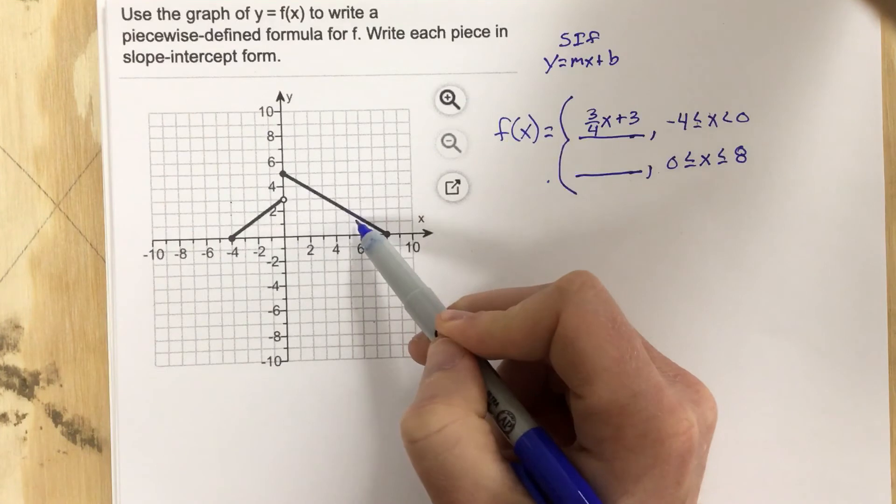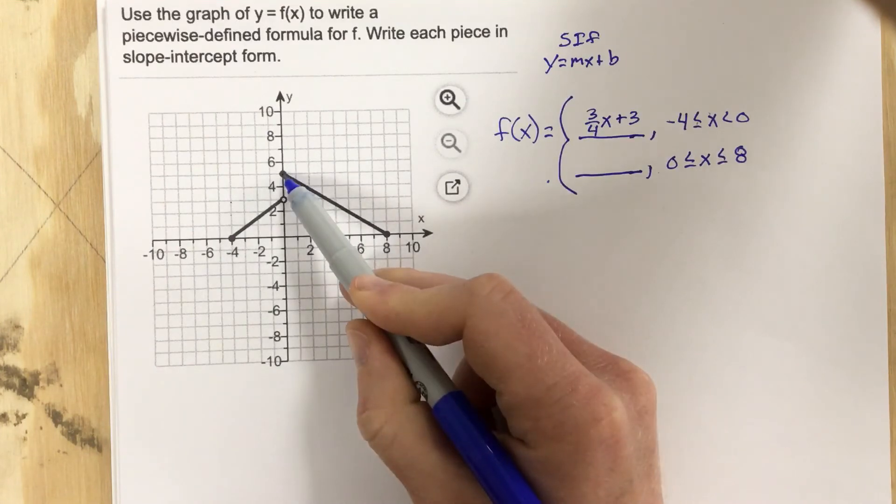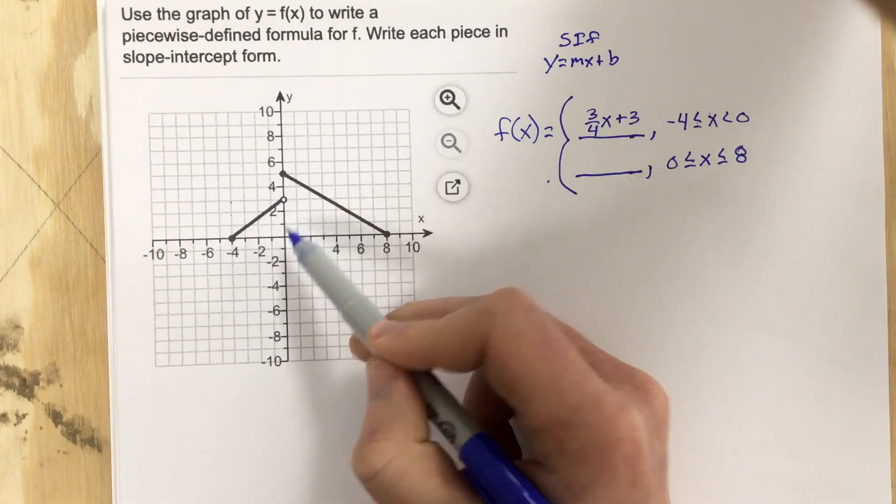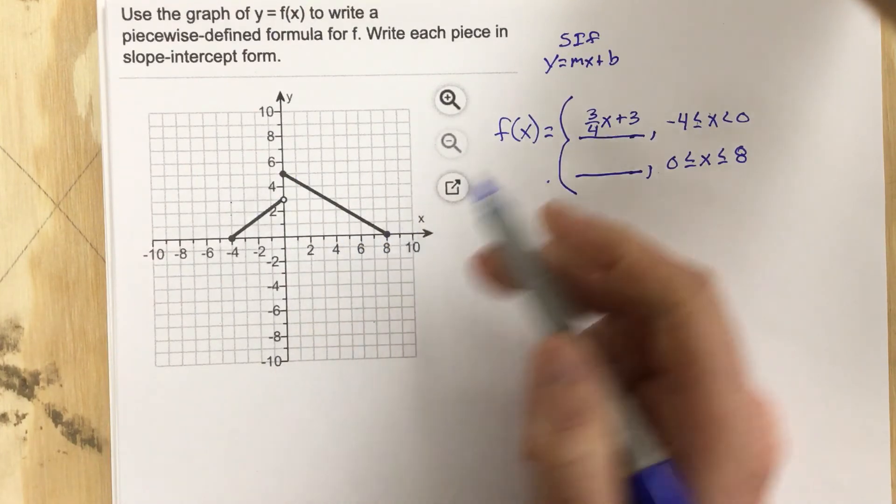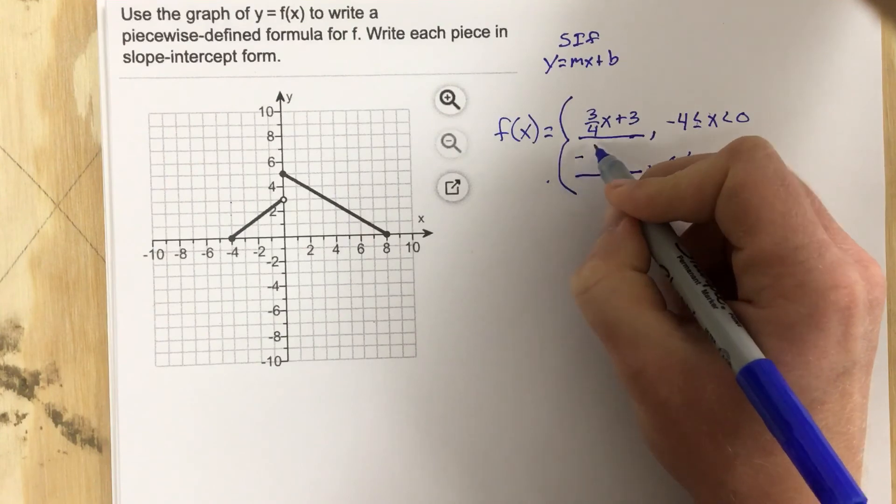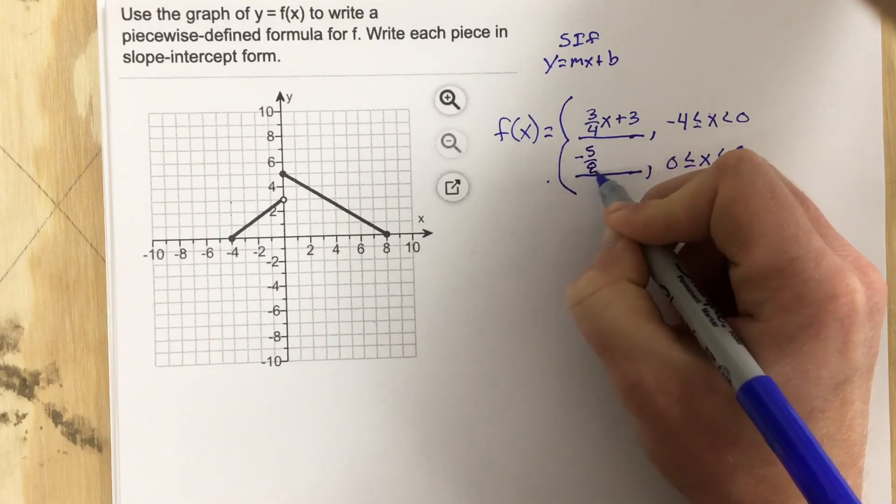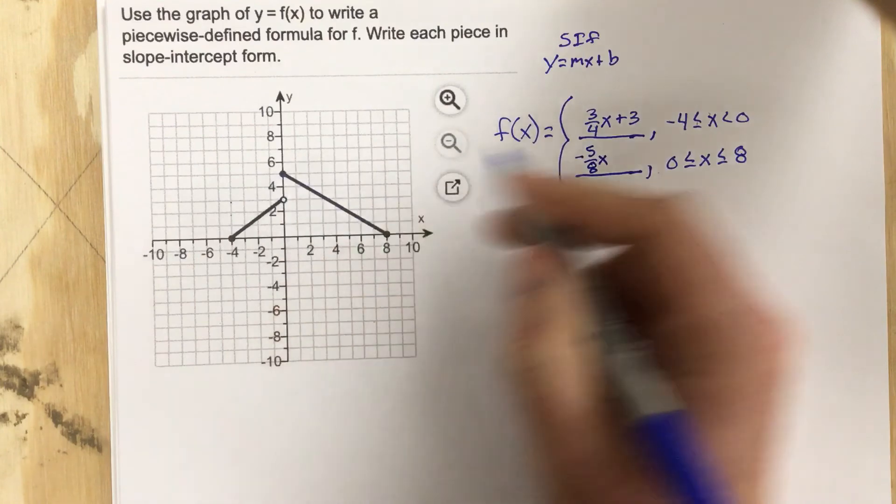My slope for the second one is negative, and it's down one, well, it's down five. This is that five, right? So it's down five, and then over eight. So this one is going to be negative slope five over eight x, and my y-intercept for that one is five.